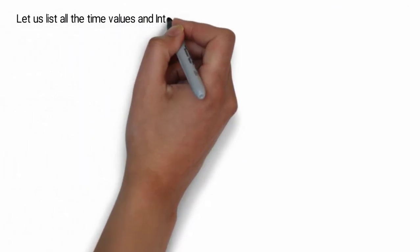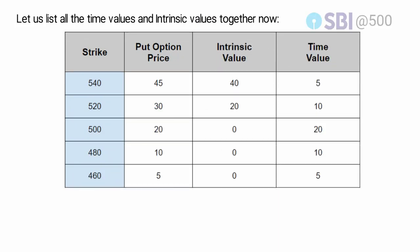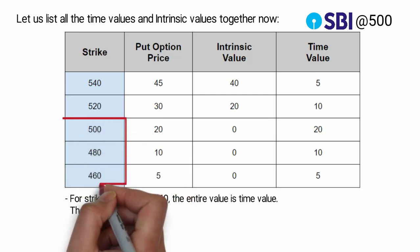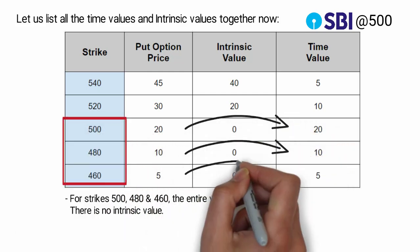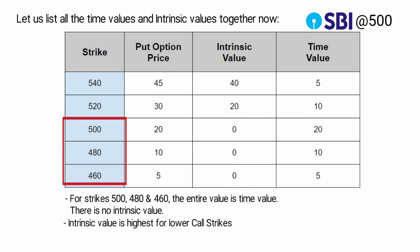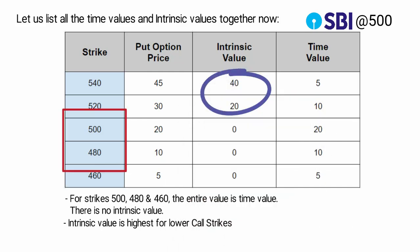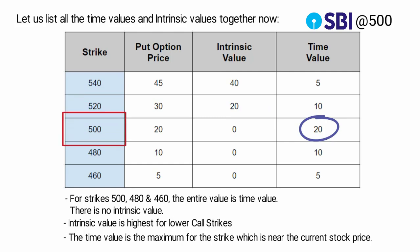Let us list all the time values and intrinsic values together now. By seeing the above table, we can note the following points. Number one: for strikes 500, 480, and 460, the entire value is time value — there is no intrinsic value. Number two: intrinsic value is highest for the higher put strikes. Number three: the time value is maximum for the strike which is near the stock price. This is the case for both calls and puts.